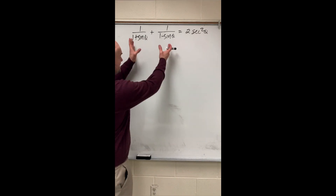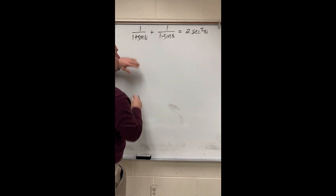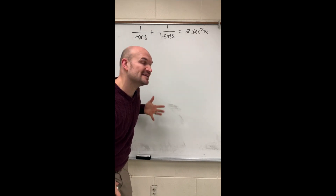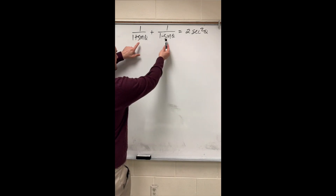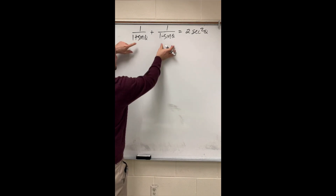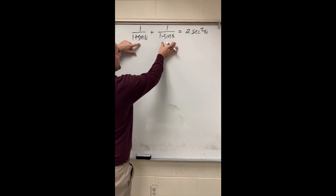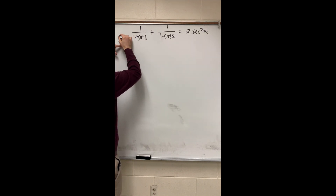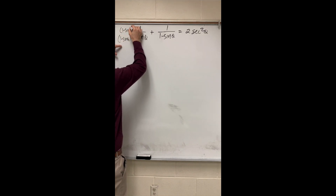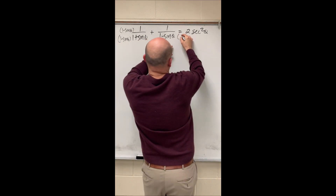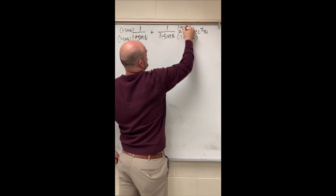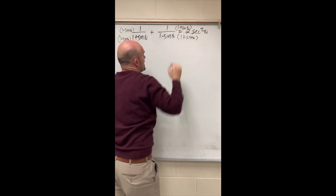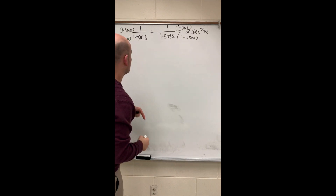I'm going to pick the left side because I need to add these two fractions. Since they don't have any common denominators, I need to identify the common denominator, which since they don't have any factors in common is just going to be the product of the two denominators. So I'm going to multiply by 1 minus sine of theta on the top and bottom of the first fraction, and by 1 plus sine of theta on the other side, achieving a common denominator of 1 minus sine of theta times 1 plus sine of theta.